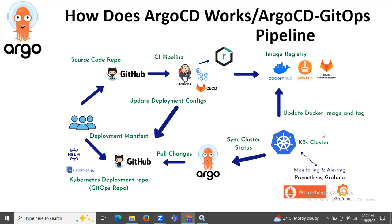This push triggers a synchronization and new code is automatically deployed to the target Kubernetes cluster. The Kubernetes cluster is also monitored using monitoring and alerting tools like Prometheus, Grafana, and CloudWatch.